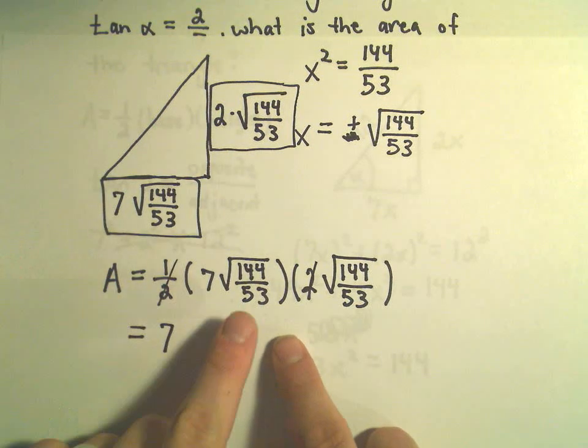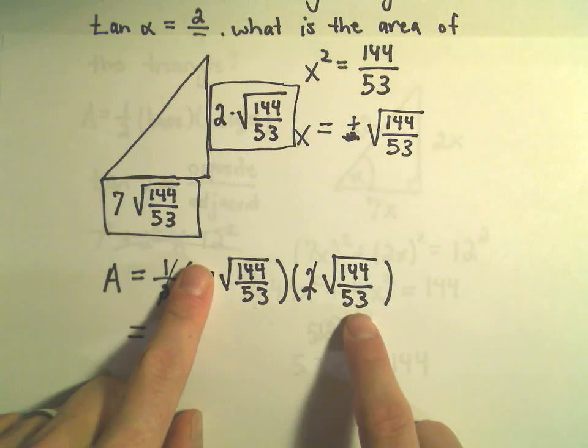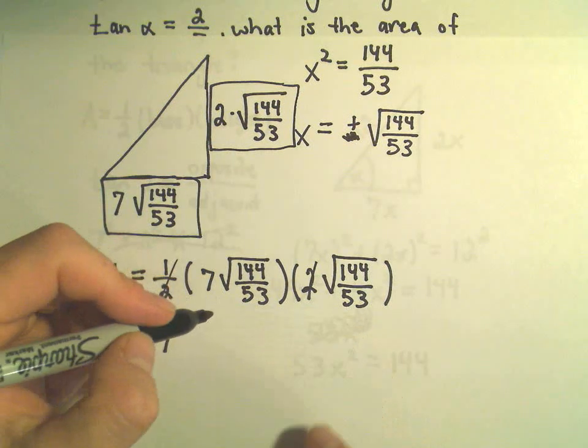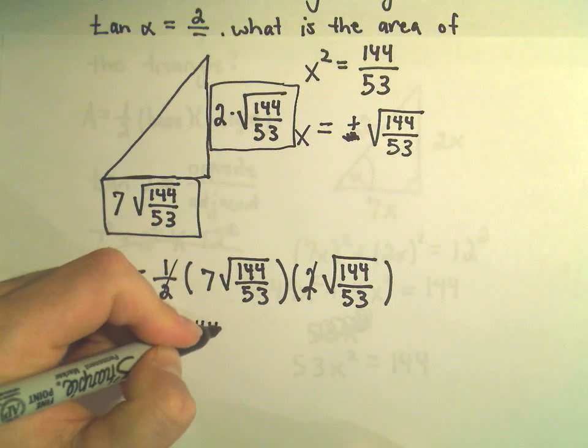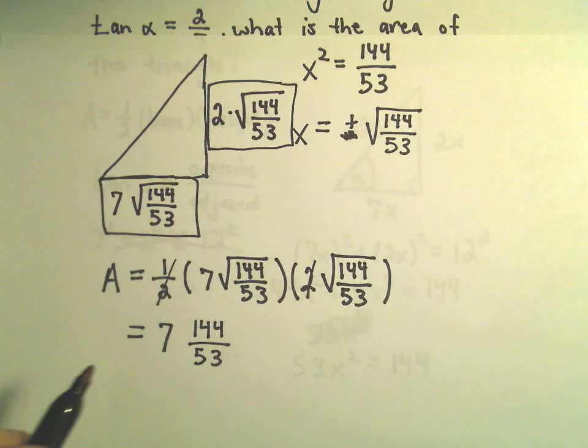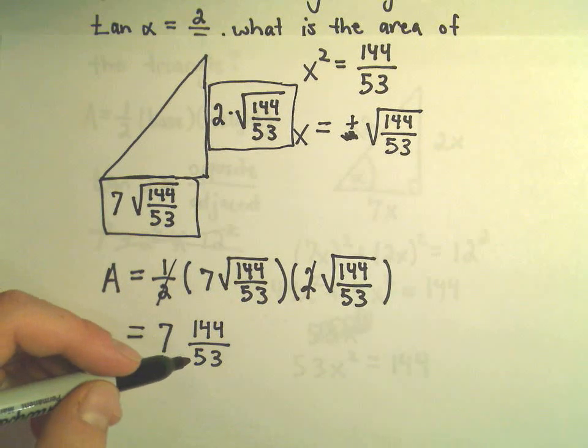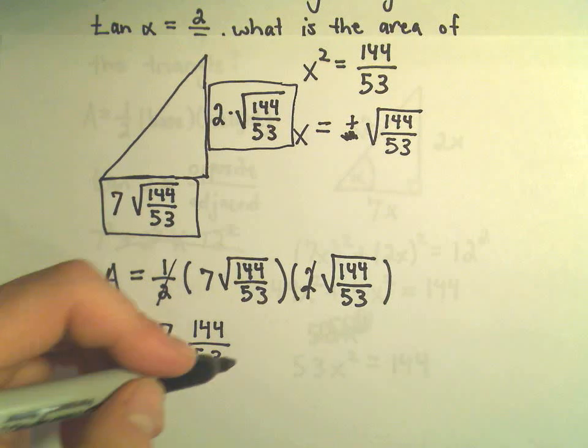We've got 7 left over. The square root of 144 over 53 times the square root of 144 over 53. Well, that's just going to give us 144 over 53. And, at this point, let's see, I don't believe things reduce too well at all. 53 is a prime number.